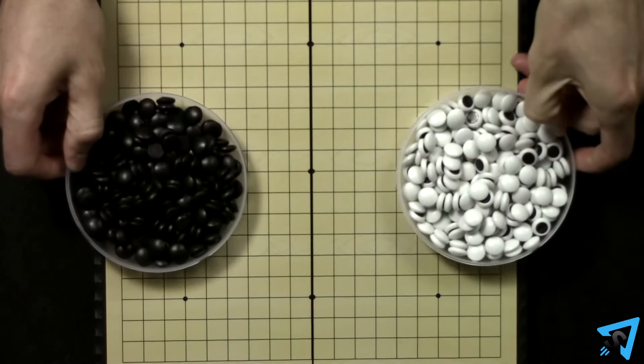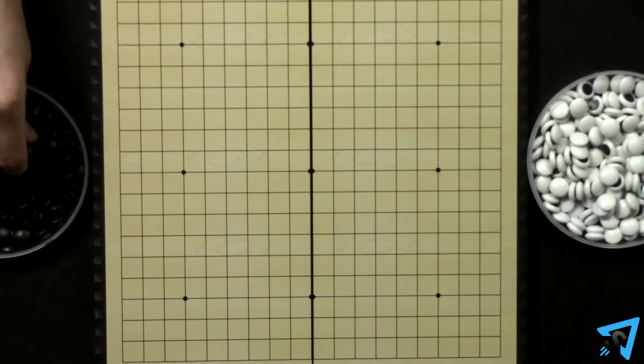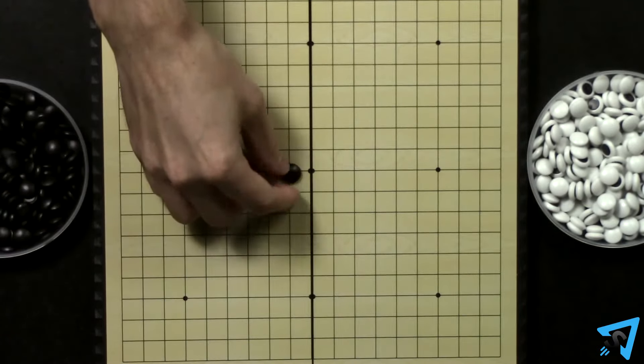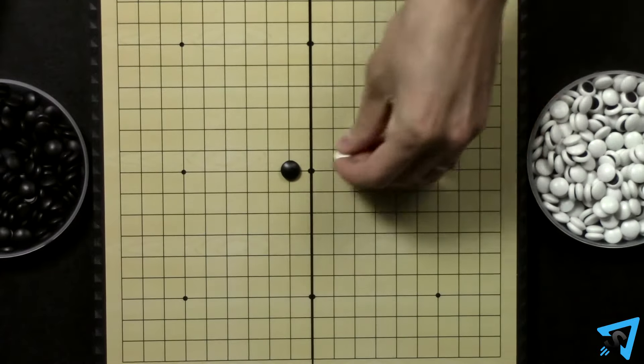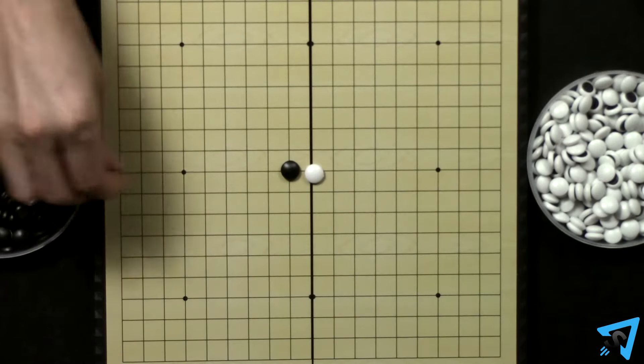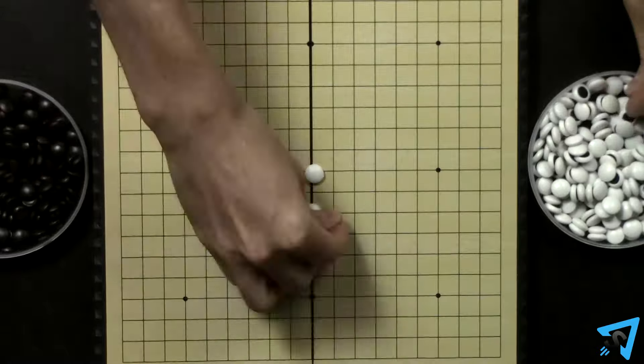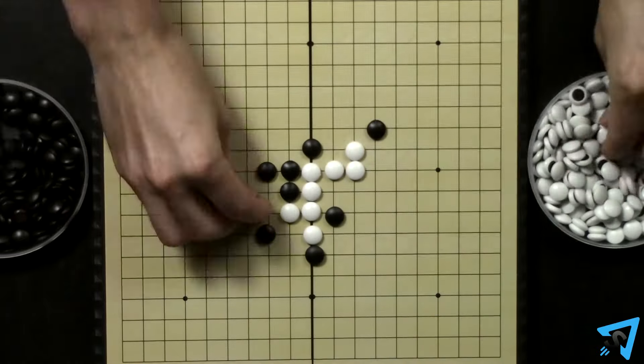Using a Go game board and stones, players alternate taking turns placing the stones on any empty intersection. Black goes first, then the players alternate. Stones may not be removed from the board once placed.